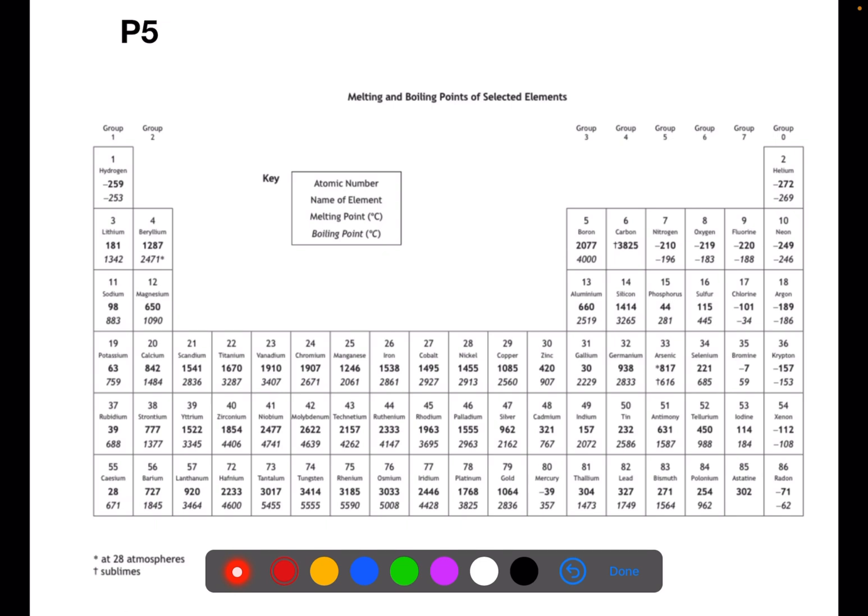You can use this page to work out what state of matter an element would be in at a certain temperature. If we start off as a solid, we can then increase the temperature until we get to the melting point. At that point you will then have a liquid. If you continue to heat this up you will eventually hit the boiling point and at that point you will have a gas. If you are given a temperature you need to compare: is the temperature below the melting point and therefore a solid? Is it between the melting point and the boiling point and therefore a liquid? Or is it above the boiling point and therefore a gas?